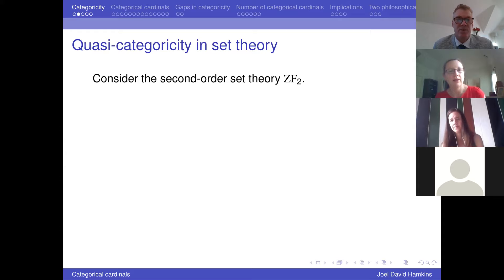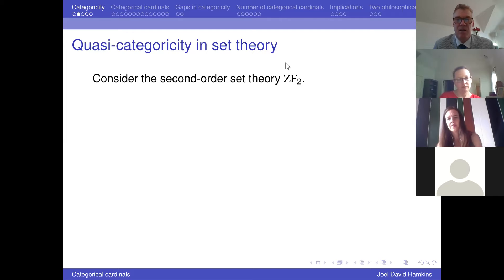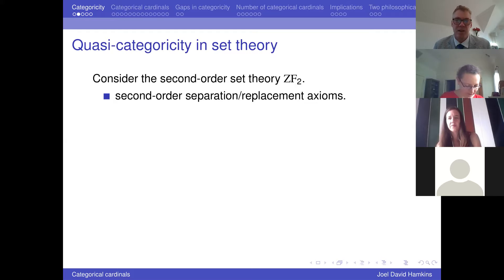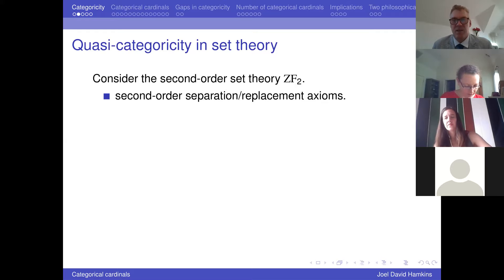In set theory, we have what's called quasi-categoricity. If we think about second-order ZF — like the first-order theory except now with second-order separation and replacement axioms, with full second-order semantics — I state the separation and replacement axioms where I'm allowed to quantify over all subsets of sets and all functions on a given domain.